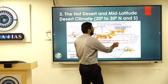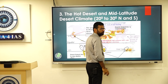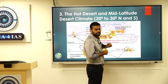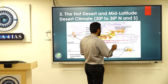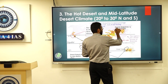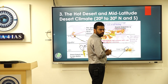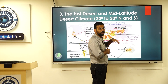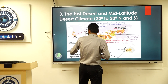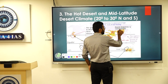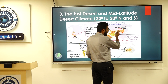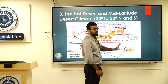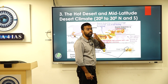For example, take the Gobi Desert in Mongolia. It is beyond 30 degrees — at 40 to 50 degrees — where westerlies blow. But this desert forms because of the continentality effect. This land mass is deep in the central interior, so ocean moisture cannot reach easily, and desert forms.